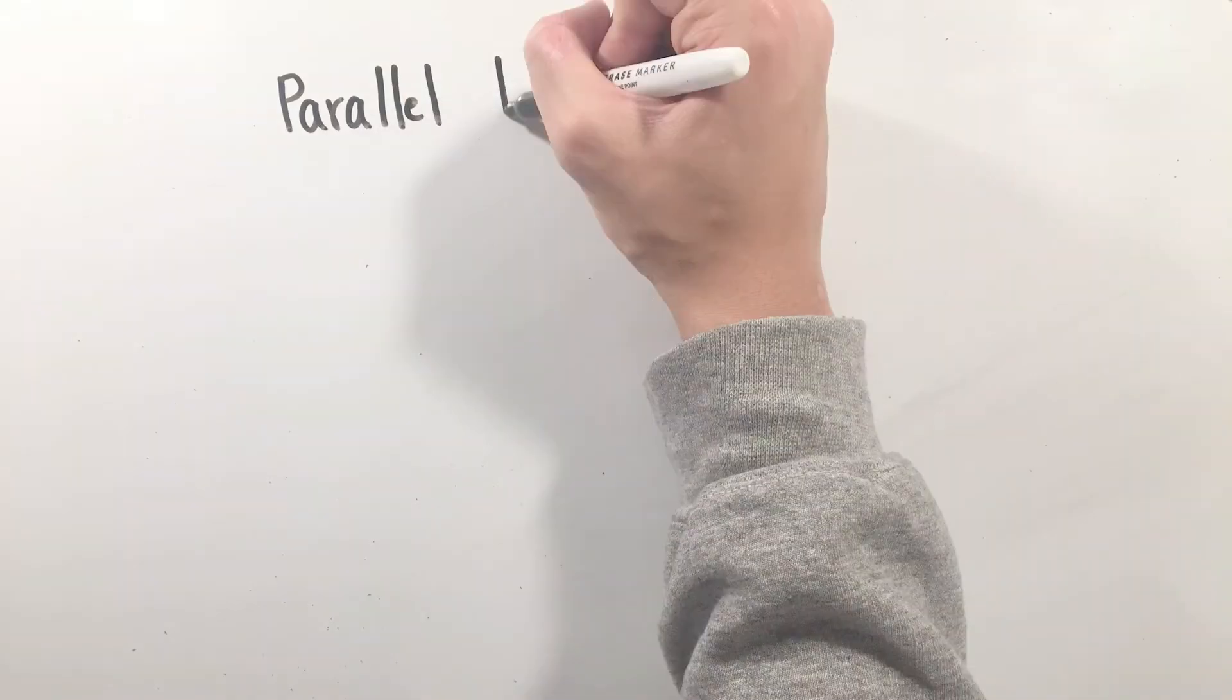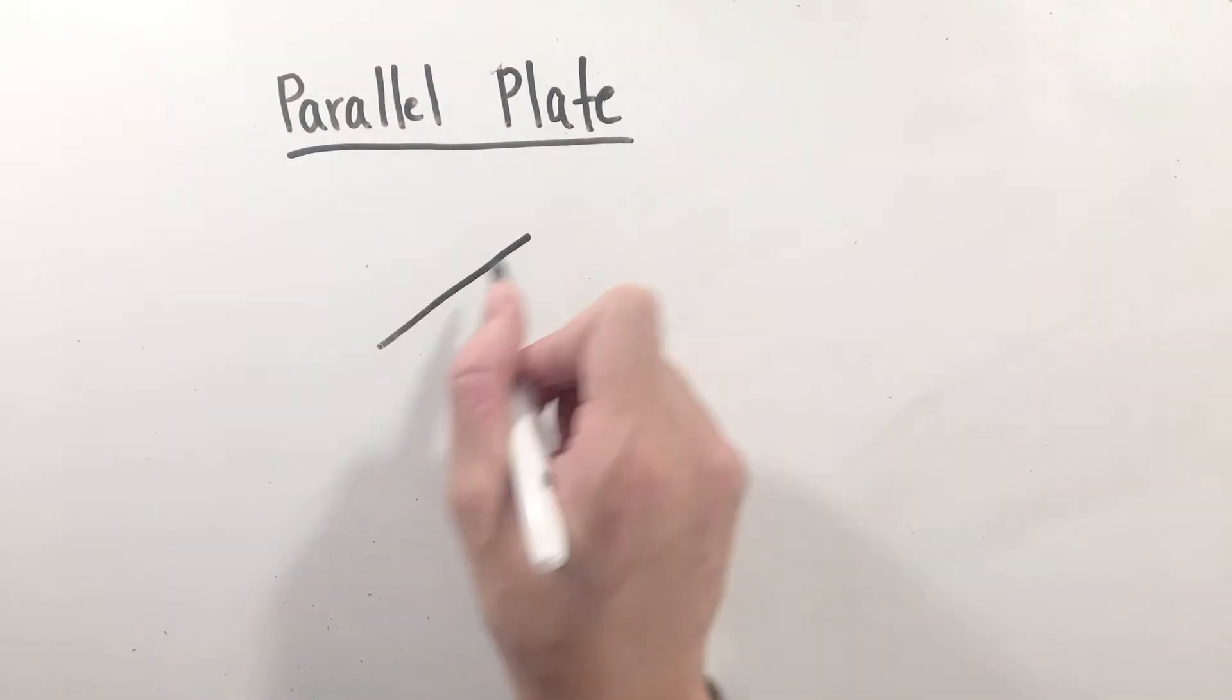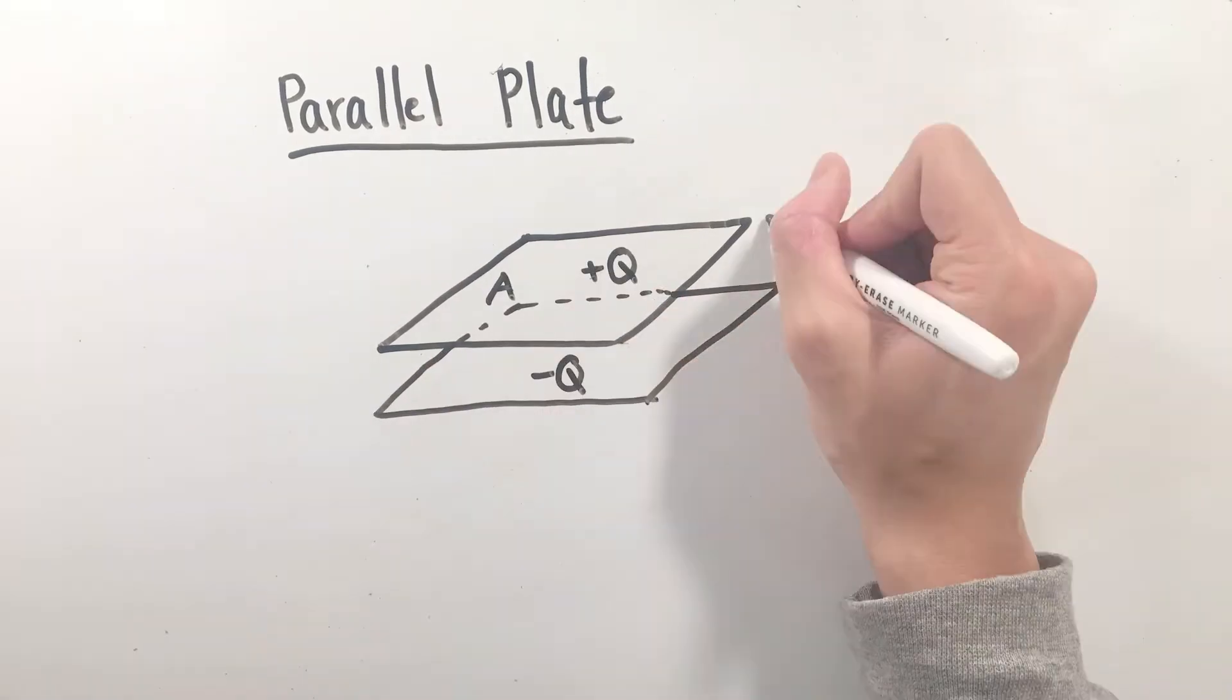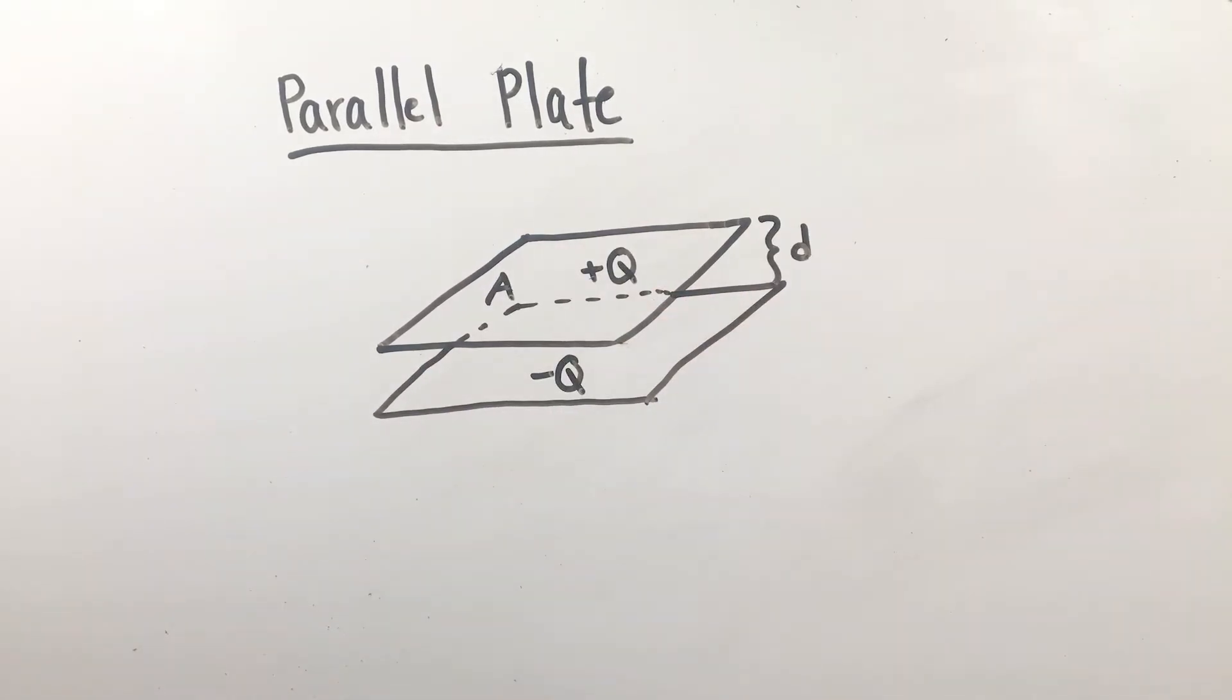Let's see this process in action, starting first with the most common type of capacitor, the parallel plate capacitor. With two metal plates with charges, areas, and separation distance, we'll call plus and minus Q, A, and D, respectively.